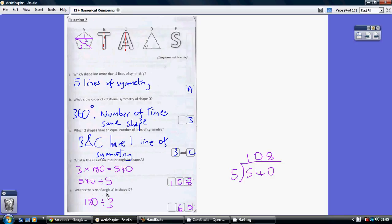What is the size of angle X in shape D? Well that's an equilateral triangle. All three angles are the same. Angles in any triangle add up to 180, so 180 divided by 3 equals 60 degrees.